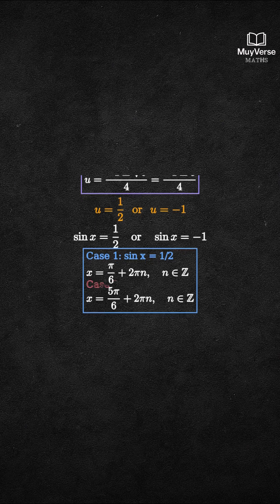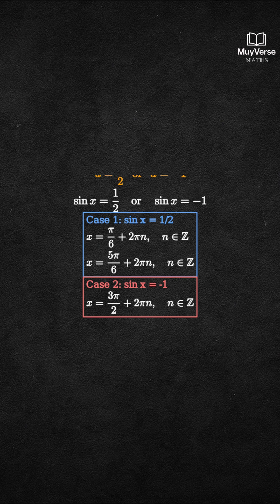Second case: If sine x equals negative 1, then x equals 3 pi over 2 plus 2 pi n, for any integer n.